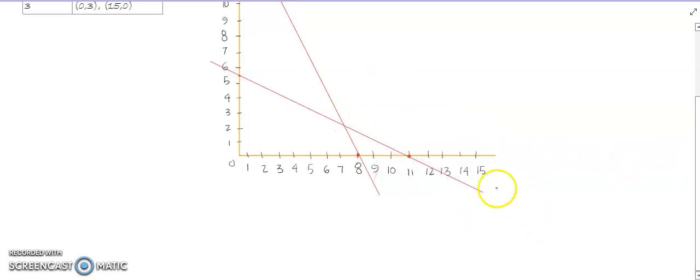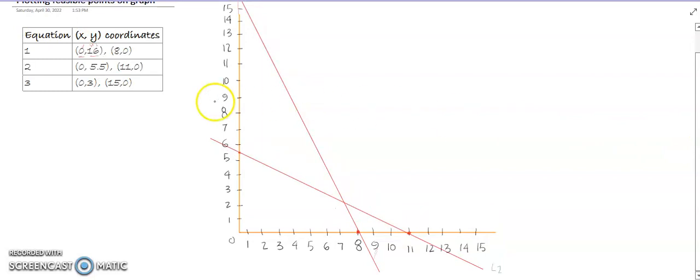This is line number 2, and we can label it as L2 or equation 2. Now we have equation number 3, in which we have 0 and at the place of x1, x2 equals 3.